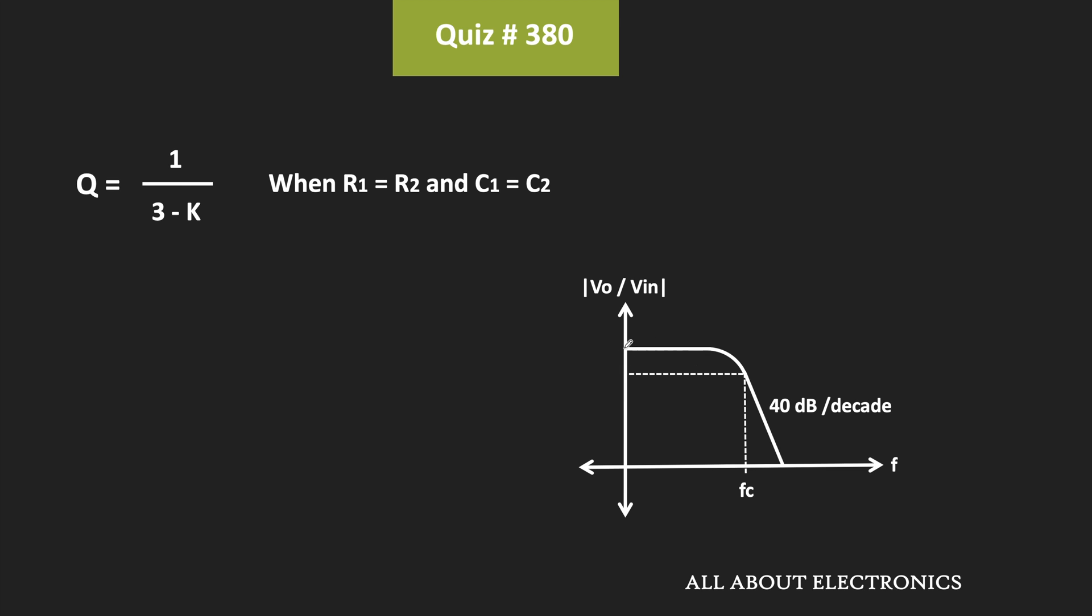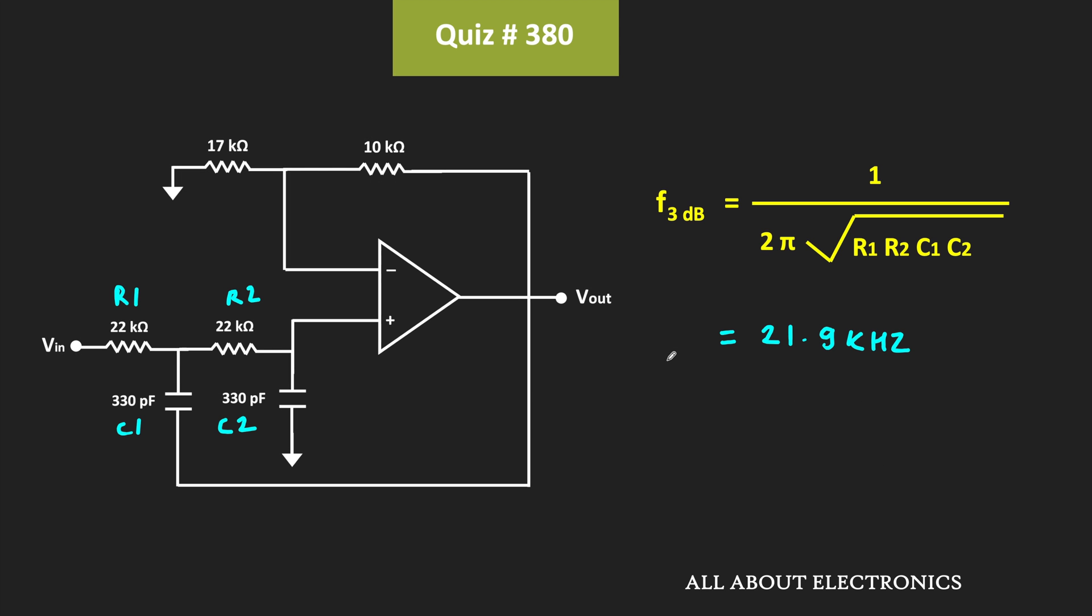To calculate the value of K, we can see how the circuit behaves at DC. At DC, these two capacitors will act as an open circuit, and in that condition, this op-amp will work in the non-inverting configuration.